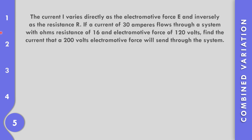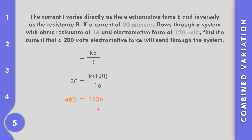Problem 5: The current i varies directly as the electromotive force e and inversely as the resistance r, so i equals ke over r. If a current of 30 amperes flows through a system with resistance of 16 ohms and electromotive force of 120 volts, substitute: 30 equals 120k over 16. So 30 times 16 equals 480 equals 120k. Dividing both sides by 120, k equals 4.